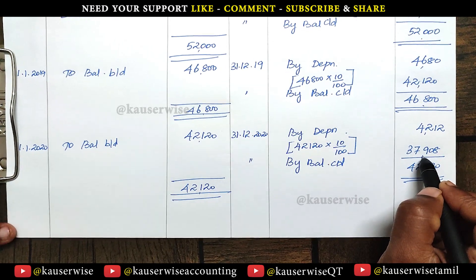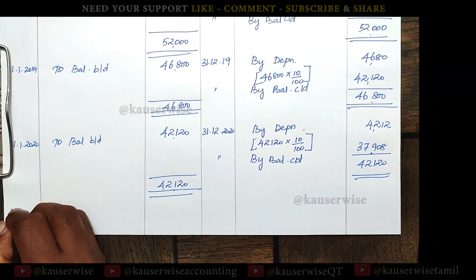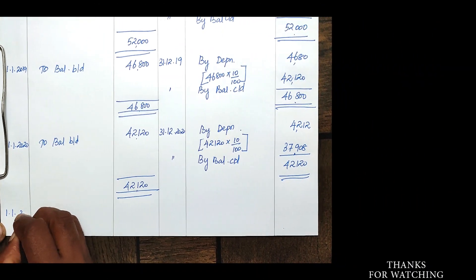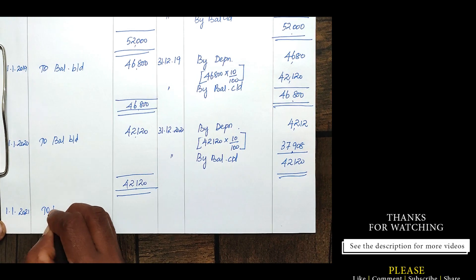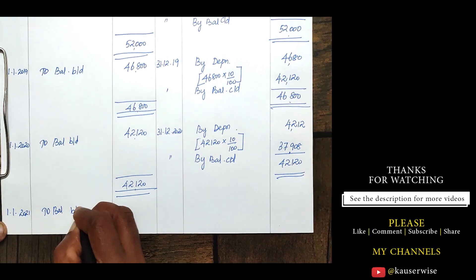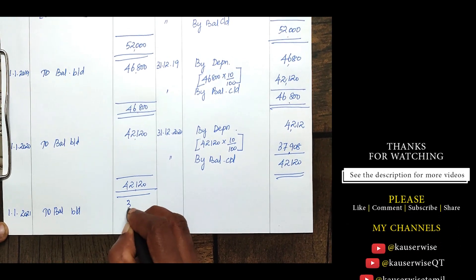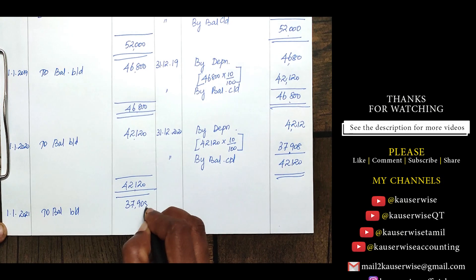This will be the opening balance for the next year. On 1-1-2021, to balance brought down — 37,908.